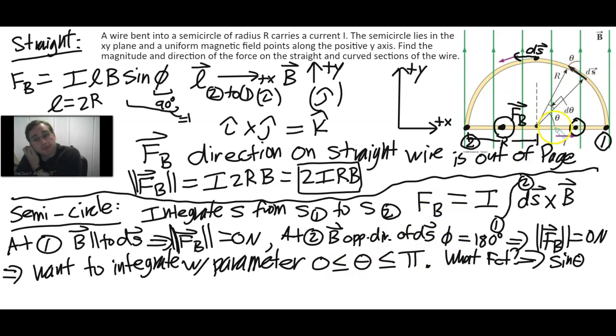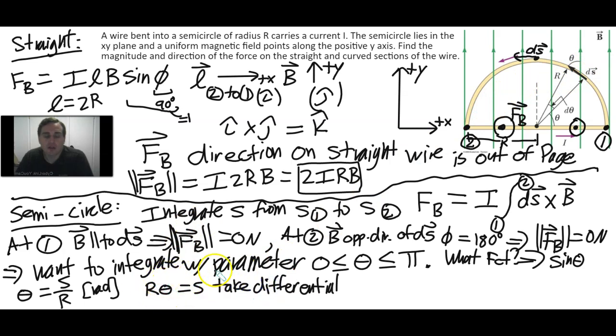Let's see if we can write DS in terms of theta. S is an arc length along a circle. Recall that theta equals S divided by R, which has units of radians. We can rearrange this to say R theta equals S. We want infinitesimally small, so we should take the differential of this equation. R D theta equals DS in terms of magnitude.